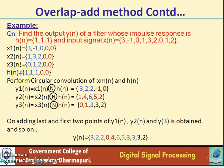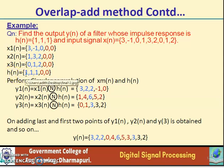Similarly, we make the length of h(n) equal to L plus M minus 1. Already h(n) has length M equals 3, that is {1, 1, 1}. We add L minus 1 equals 2 zeros to it. So h(n) becomes {1, 1, 1, 0, 0}, which also has length 5.